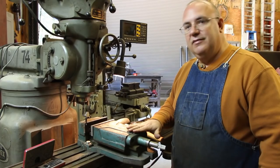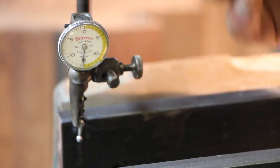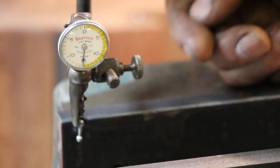Okay, this is the Starrett last word indicator, and I've just got it mounted into the collet on my mill. It could be in the drill chuck; there's no reason to put it in a collet per se, just something to hold it here. I'm using one of the holders that came with the set that actually allows me to bend it out to 90 degrees.